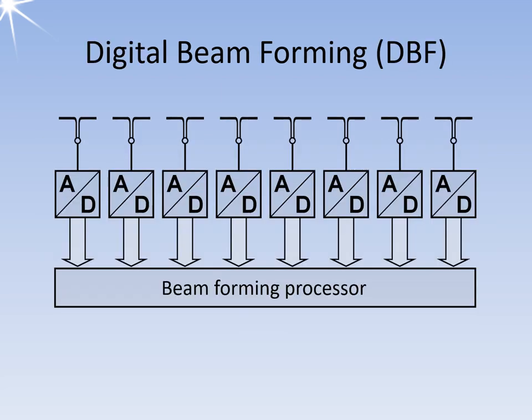In digital beamforming, each antenna element of the phased array gets its own analog-to-digital converter and the antenna pattern can be generated by digital phase shifting and weighting. Since digital information can be duplicated without loss, many different beams can be formed digitally at the same time, limited only by the required computing power of the beamforming processor.